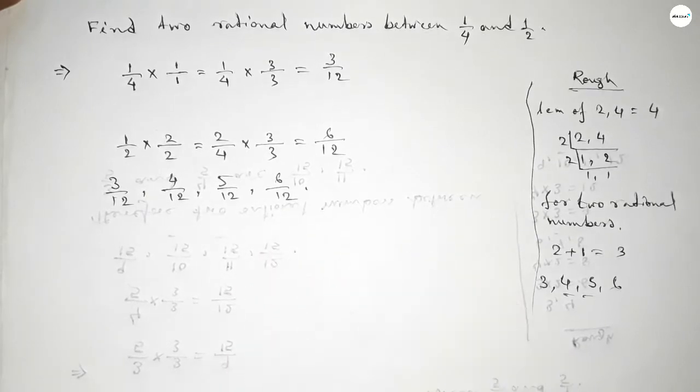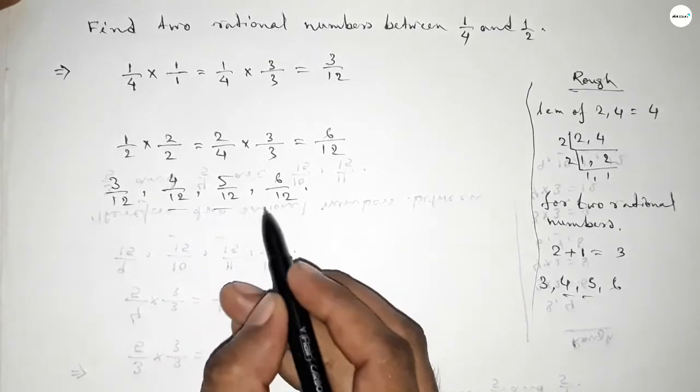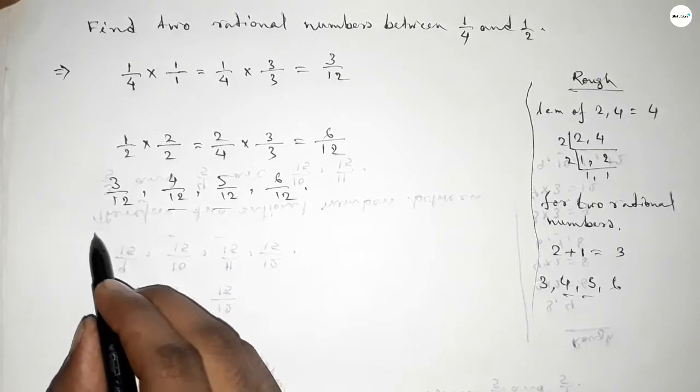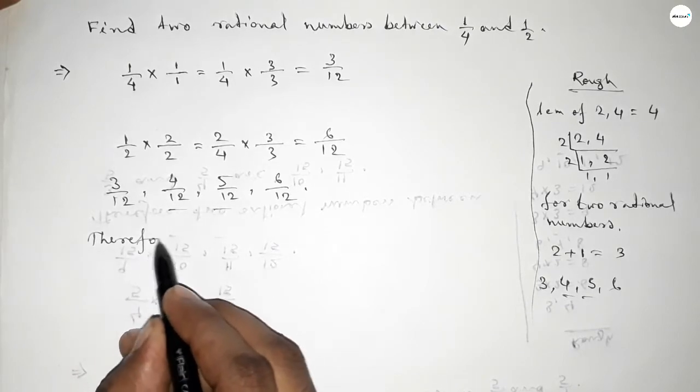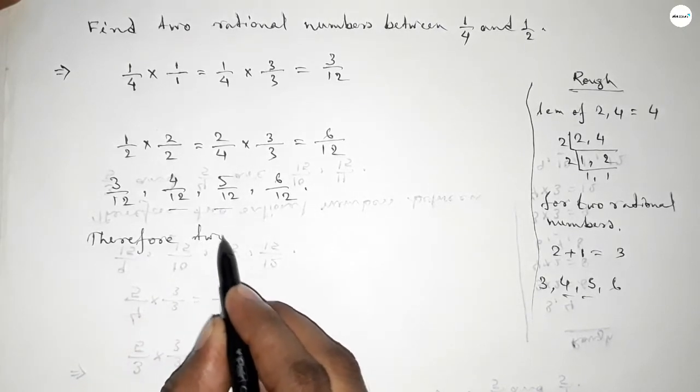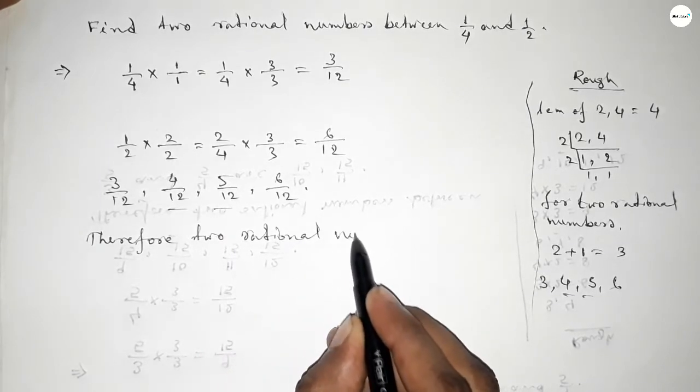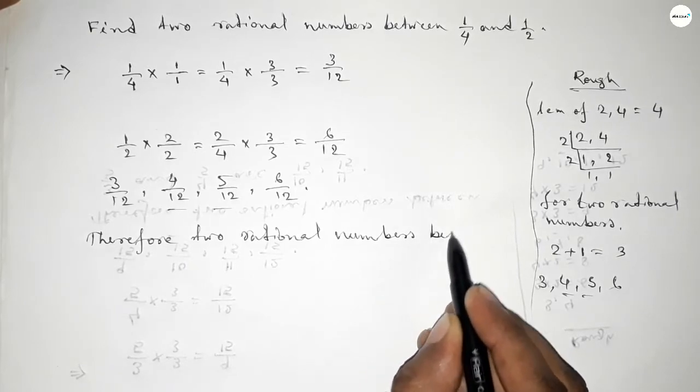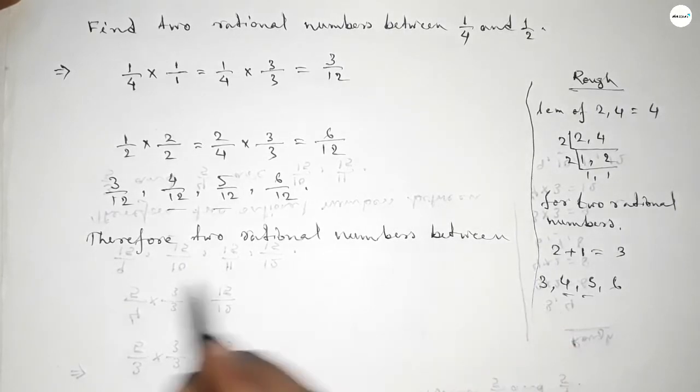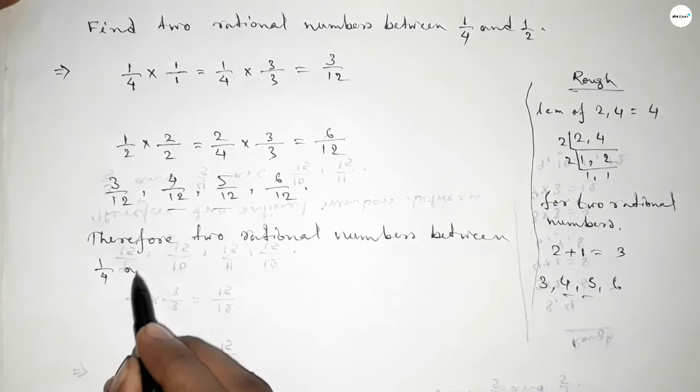Among these, the two rational numbers between 1/4 and 1/2 are 4/12 and 5/12. Therefore, two rational numbers between 1/4 and 1/2 are 4/12 and 5/12.